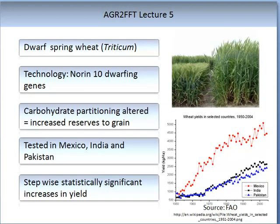So let us have a look at the technology. On the screen you will see a picture of two types of wheat. The tall variety on the right-hand side is the traditional spring wheat, Triticum. On the left-hand side is the shorter dwarf spring wheat. It was a modification of the Norin gene which enabled this dwarfing response. This is important because it alters carbohydrate partitioning — it changes where the reserves can go, meaning more energy and carbohydrates go into the grain. You grow wheat for grain.